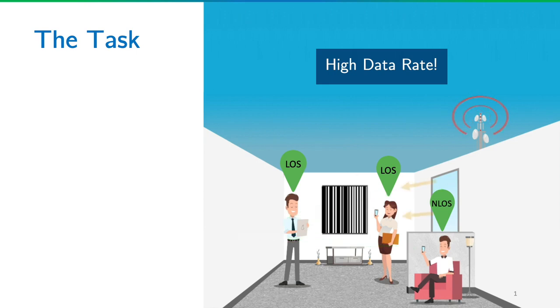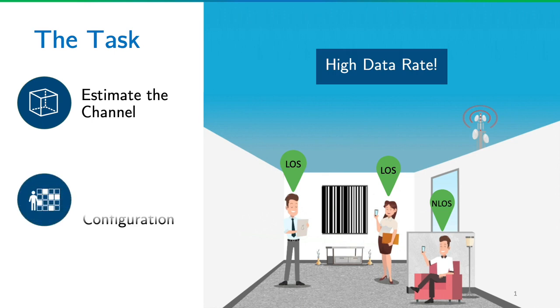All the channels that do not include the IRS form the uncontrollable channel. Our task is twofold: extracting information from the data set and estimating both controllable and uncontrollable channels faithfully. Secondly, to search the optimum IRS configuration for each line-of-sight and non-line-of-sight user.